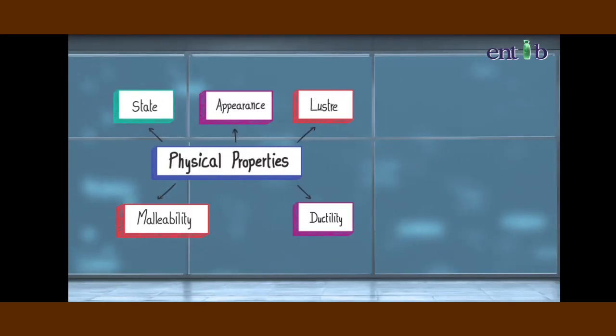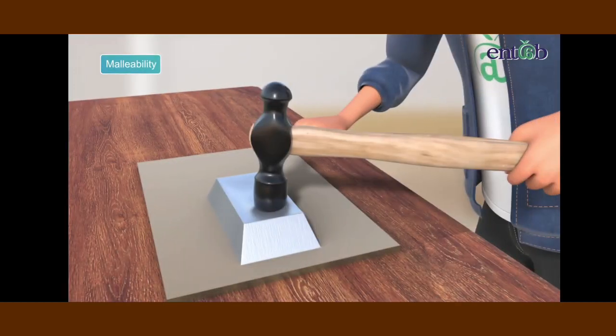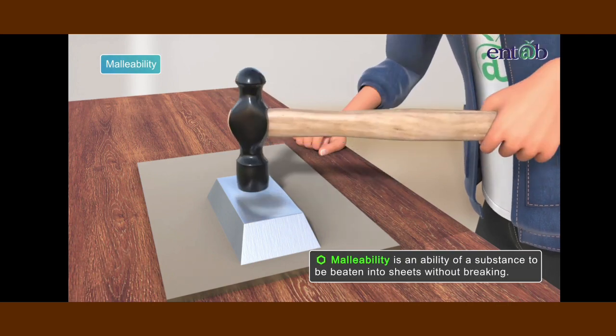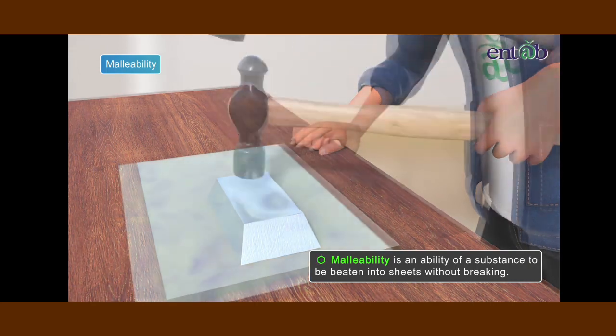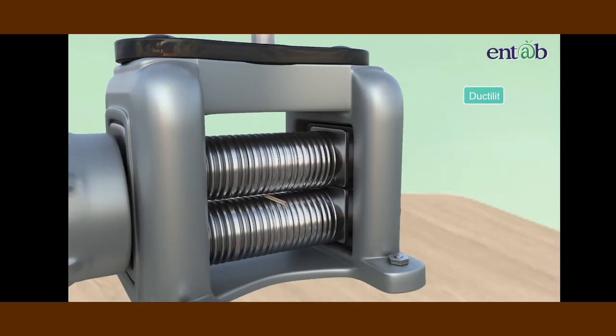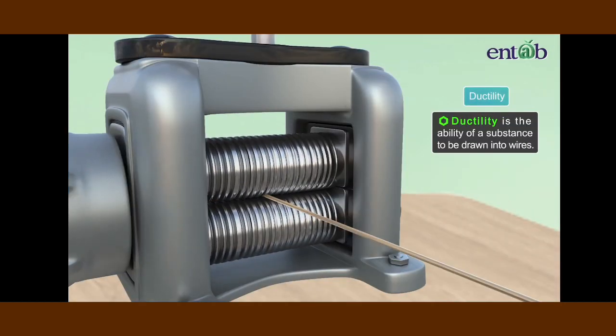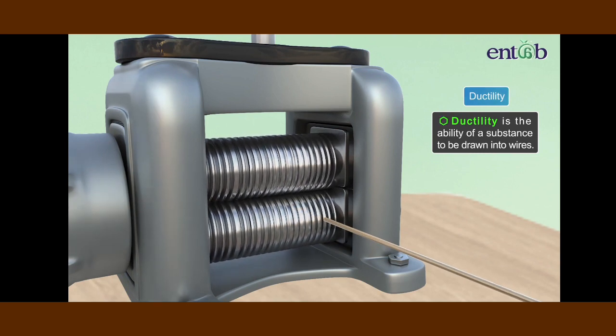What do you understand by the terms malleability and ductility? We have learned that malleability is a property or an ability of any metal that allows it to be beaten into thin sheets without breaking. Most metals are malleable, whereas ductility is the property or an ability of a substance to be drawn into wires.